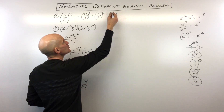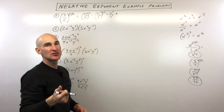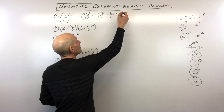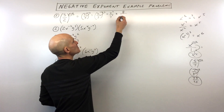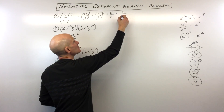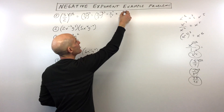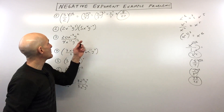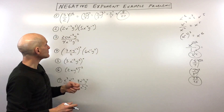So 2 cubed is 2 times 2 times 2, which is 8. 3 cubed is 3 times 3 times 3, which is 27. And we've got it. Okay, so let's go to example number 2.